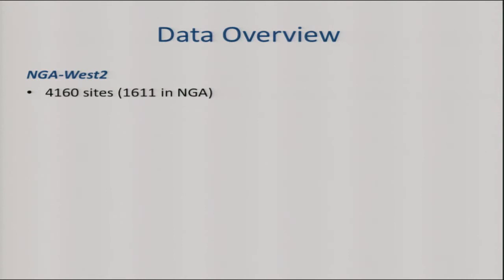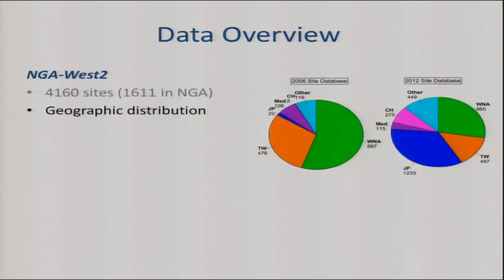There are currently 4,160 sites. About 1,000 of those are the small magnitude data set Tim mentioned. For comparison, there were about 1,600 in the original NGA. Geographically, the original NGA was mostly California and Taiwan. In the current database, still a lot of California and Taiwan, but now a lot of Japan sites have come in — that's a big change. Also China. Japan is now a major contributor, and it really was not much of a contributor before.